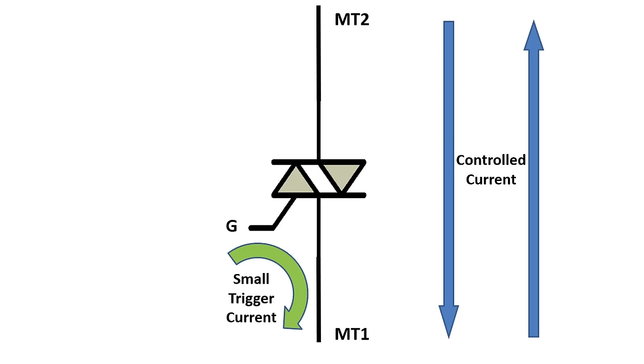To better understand the working principle, we can give an example. As here, let's connect a lamp between the MT1 and MT2 pins of the TRIAC and control the lighting of this lamp with an AC source. In this way, when we place the lamp, the lamp will not light. Because no trigger current comes from the gate pin, no current flows through the TRIAC.